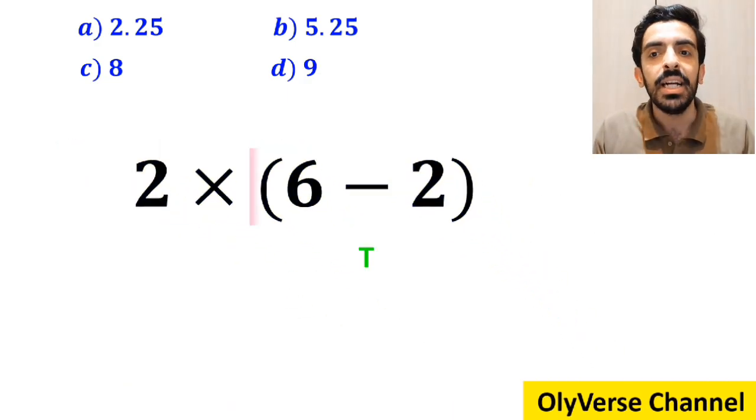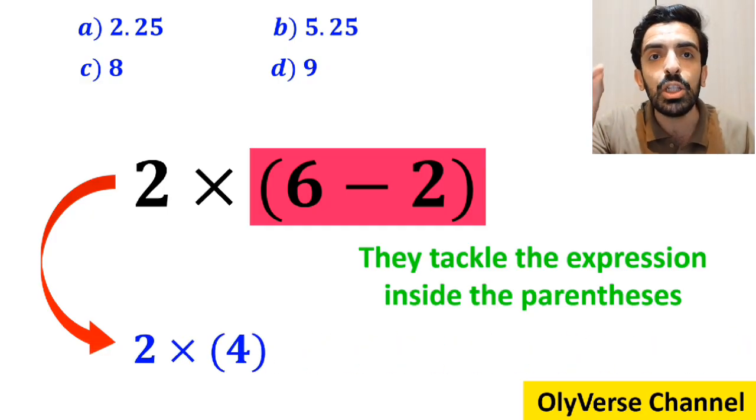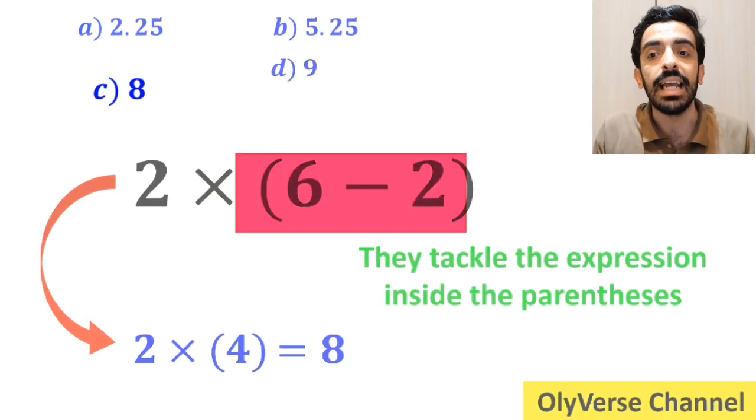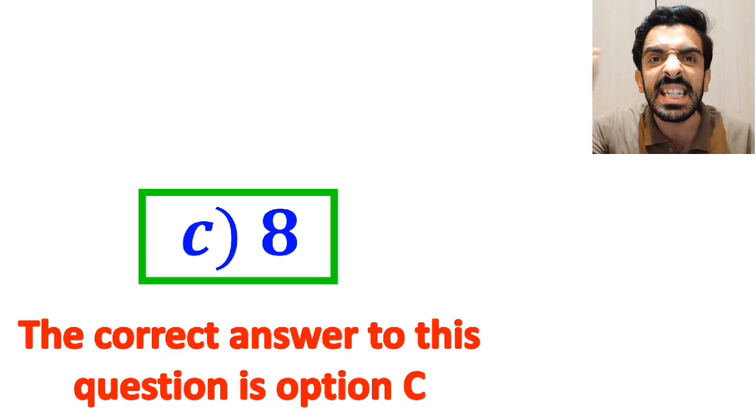And the final step they tackle the expression inside the parenthesis and rewrite it as 2 times 4 which eventually gives them the answer 8. Then, without any hesitation, they quickly say that the correct answer to this question is option C.